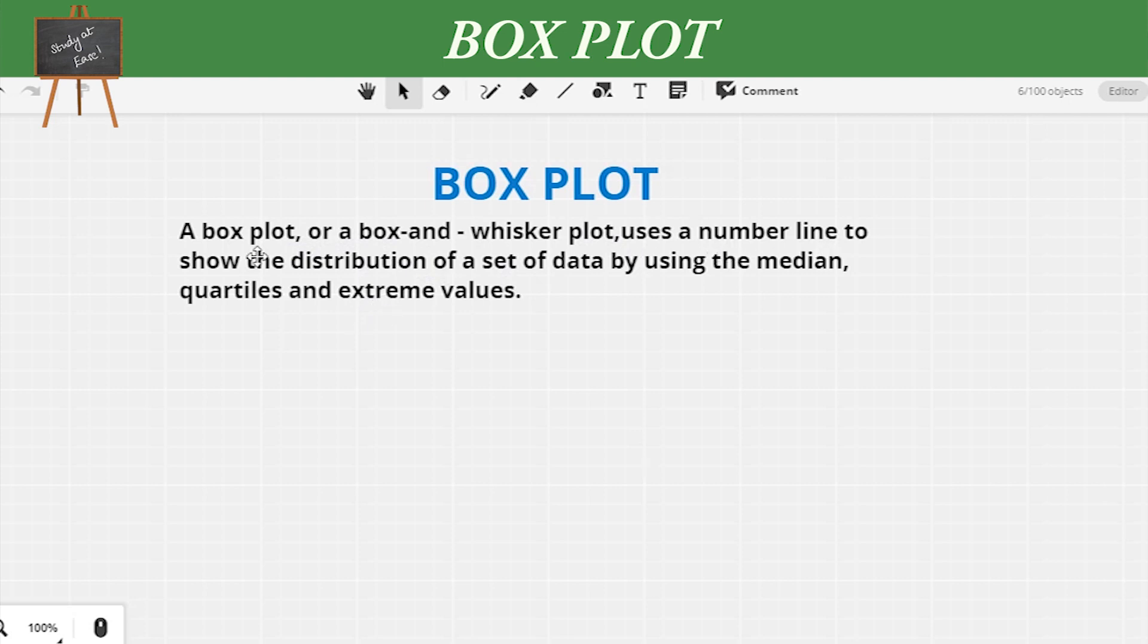A box is drawn around the quartile values and the whiskers extend from each quartile to the extreme data points that are not outliers. Let's understand in depth by doing an example question.